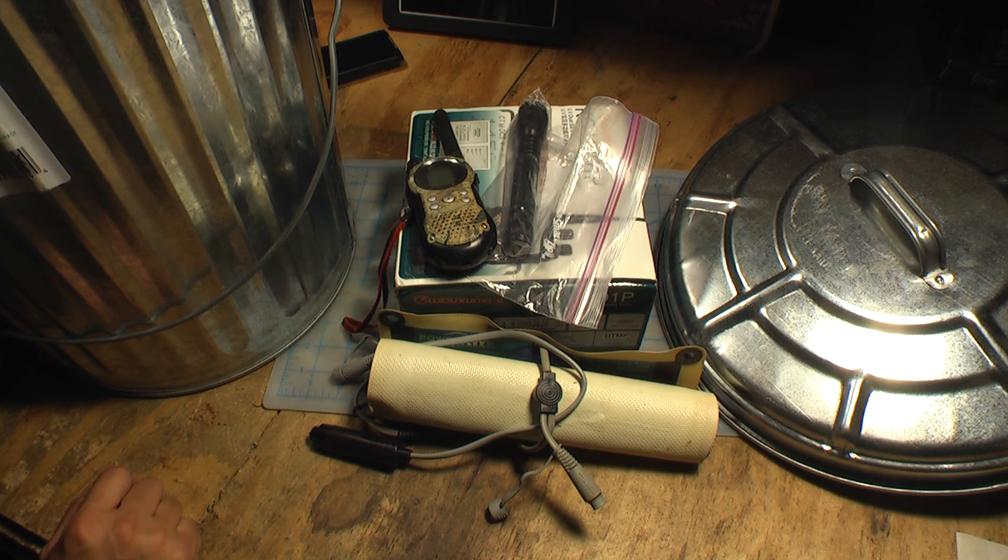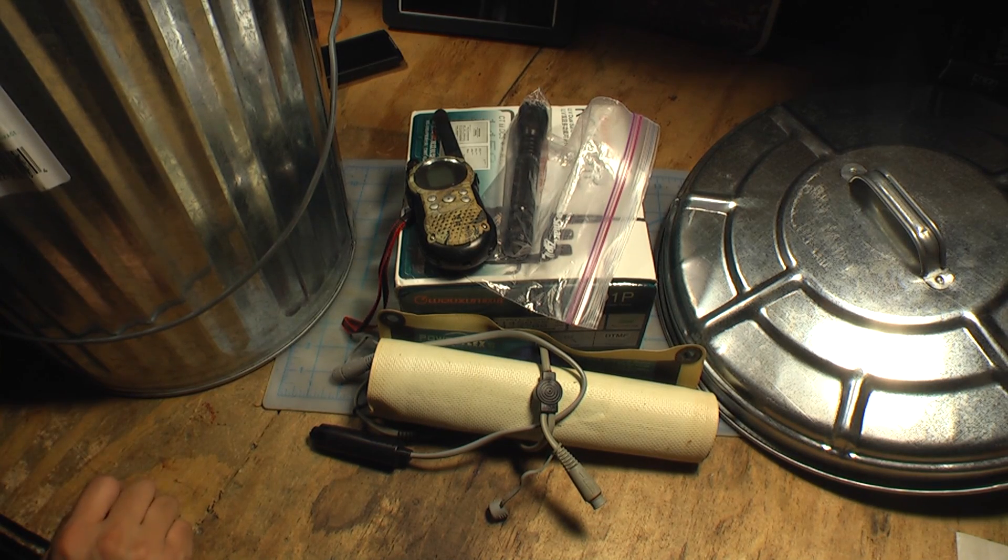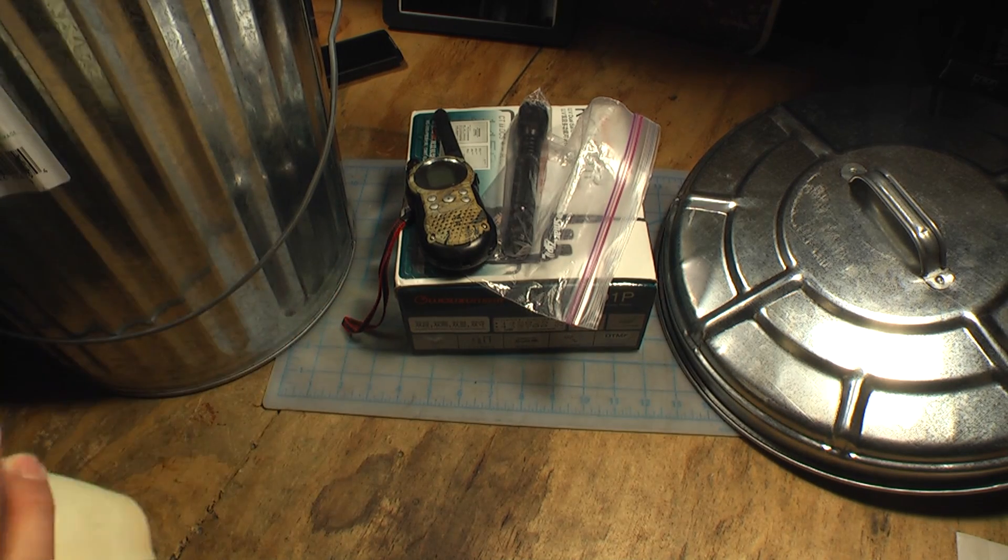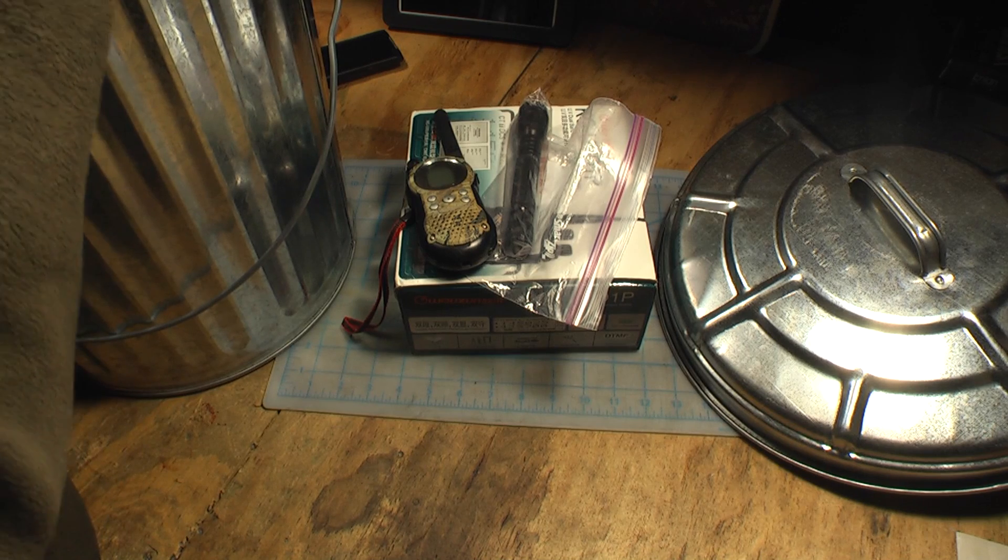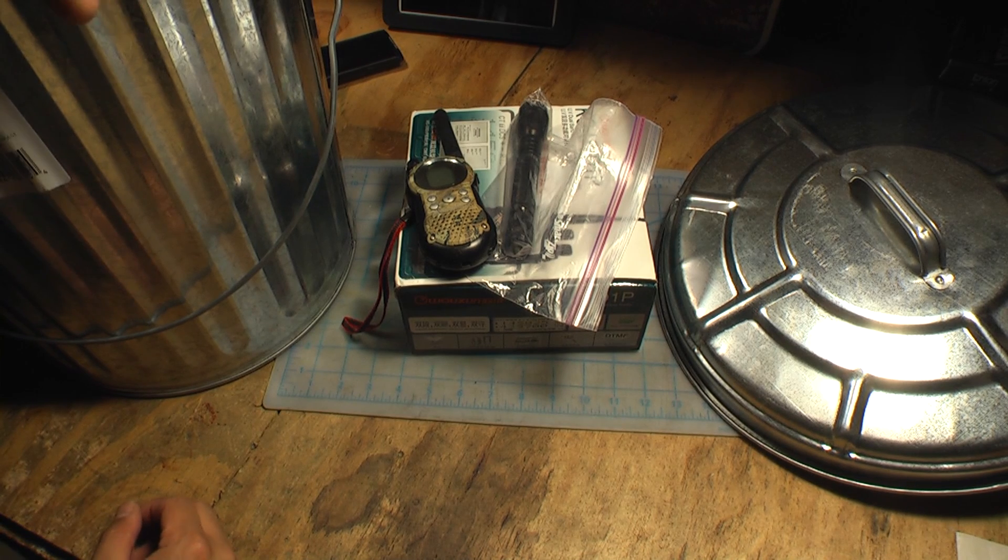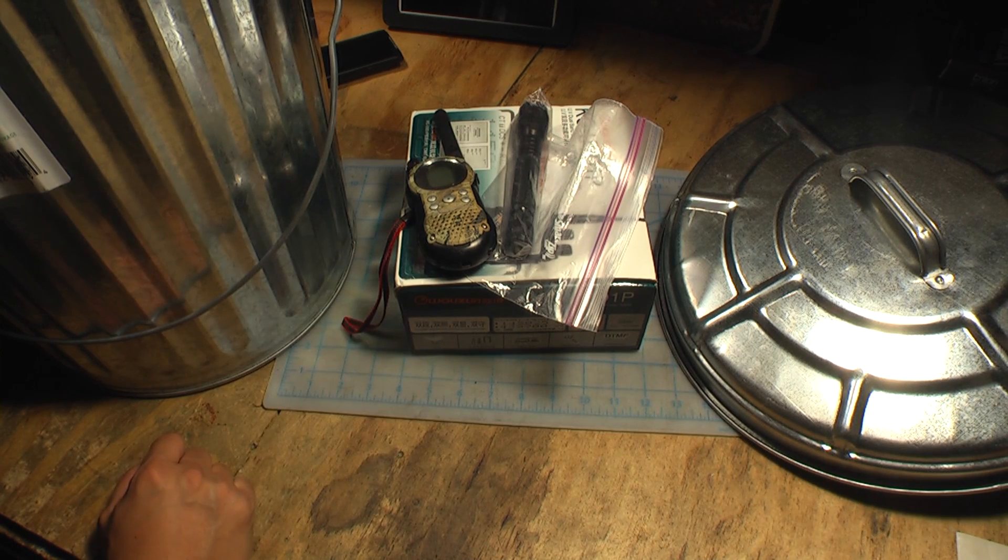It's called a Faraday cage. Whether or not these things work in the situation where you might need them to work is sort of unknown because you can't really test for it. A Faraday cage is what people like us who are preppers might use as a way to protect electronics from an EMP.